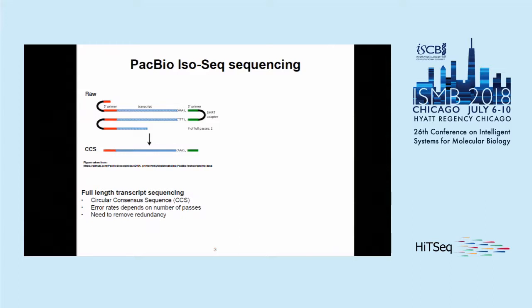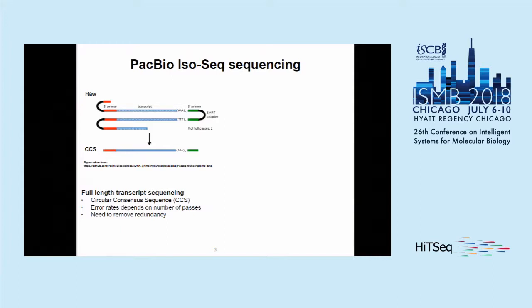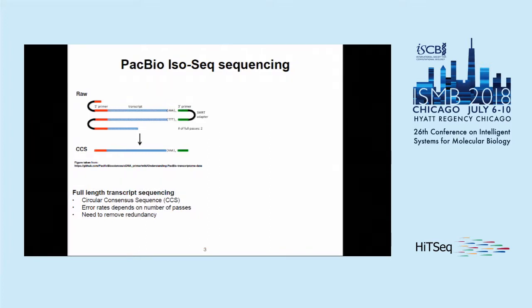So what is PacBio IsoSeq sequencing? It's a method to sequence transcripts from end to end. Through the PacBio system, you can make several passes through the transcript and use these passes to call a consensus sequence. The product of this consensus calling step is usually referred to as a circular consensus sequence, or CCS reads. These are full-length representations of transcripts and have a lower error rate than regular PacBio sequencing due to the consensus calling.